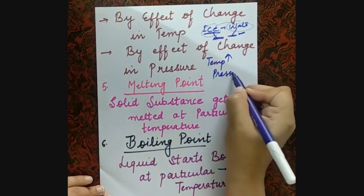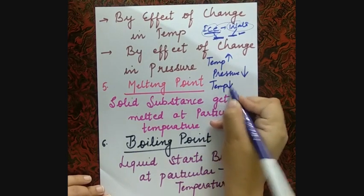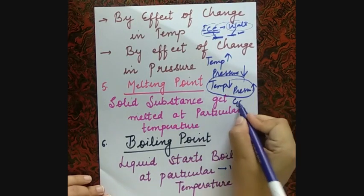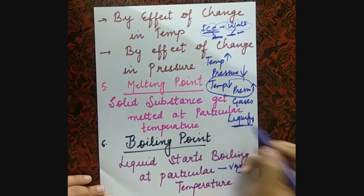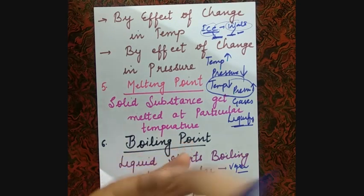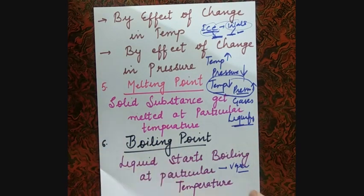In short, if the temperature of a body is increasing, its pressure automatically decreases. If we want to liquefy gases, the easiest method is: reduce the temperature and increase the pressure. Then your gases will get liquefied. For example, take carbon dioxide gas — to convert it to liquid, reduce the temperature and increase the pressure.